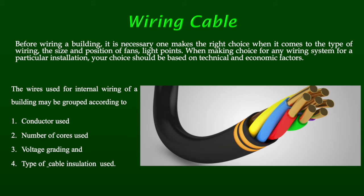The wire insulator comes in different colors to identify the various phases. In domestic single-phase wiring, one is live and another is neutral. Different colors are given to the insulator to identify them. Generally, the live wire is indicated by red color and the neutral is indicated by black color.